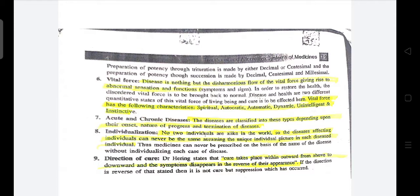Next is vital force: disease is nothing but the disharmonious flow of vital force, giving rise to abnormal sensation and functions. Vital force is basically spiritual, autocratic, automatic, dynamic, unintelligent and instinctive. Disease and health are two different quantitative states that depend on the vital force. Vital force is our way of living — lifestyle — and based on that, what disease we have depends. These are all the parameters that affect our healthy body.